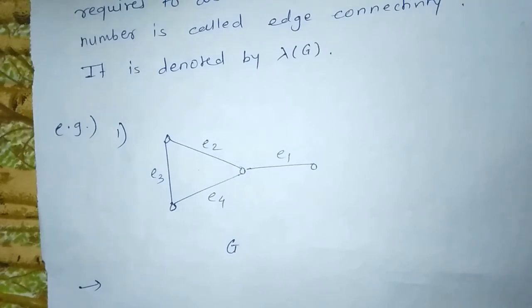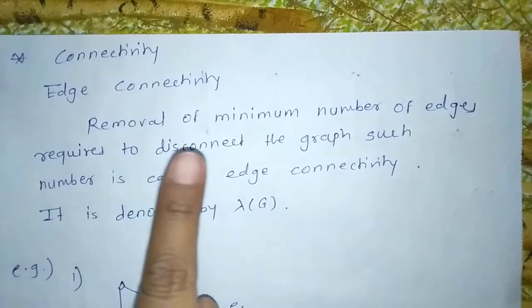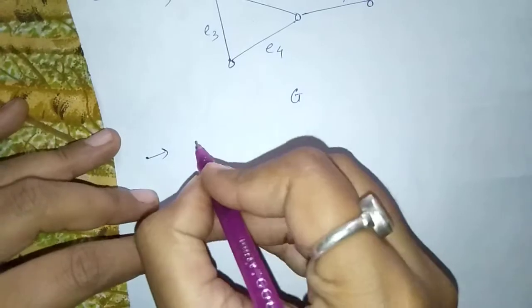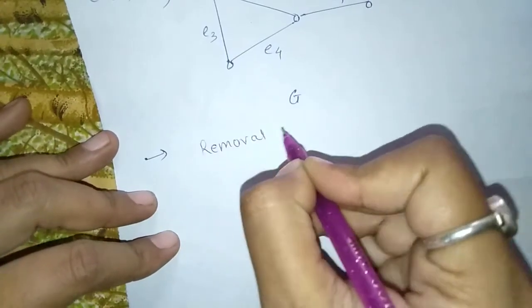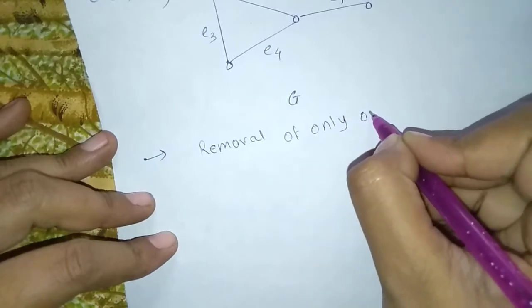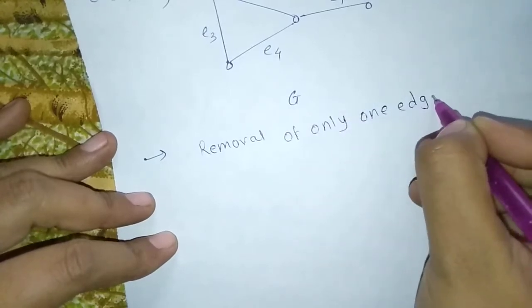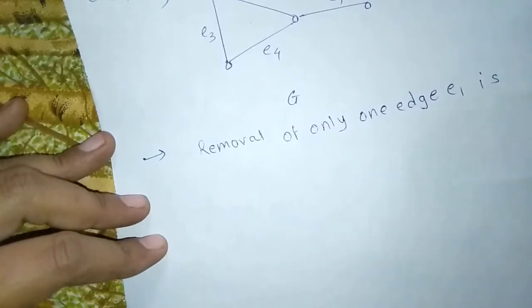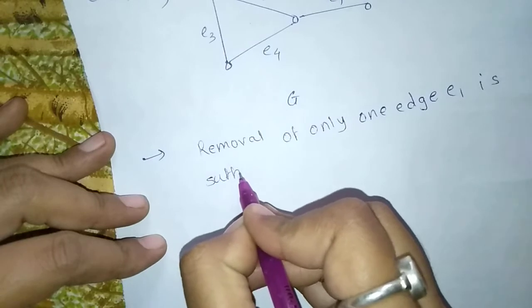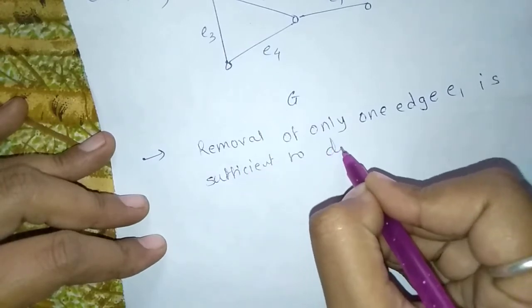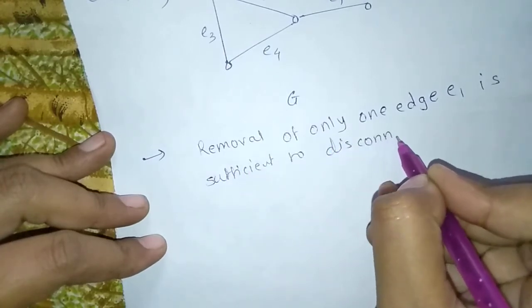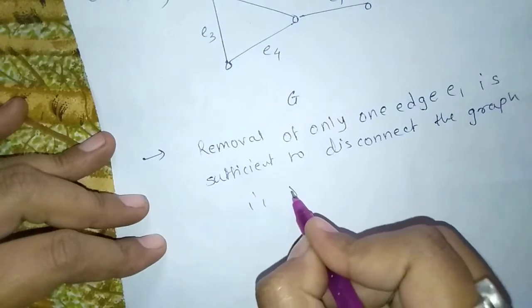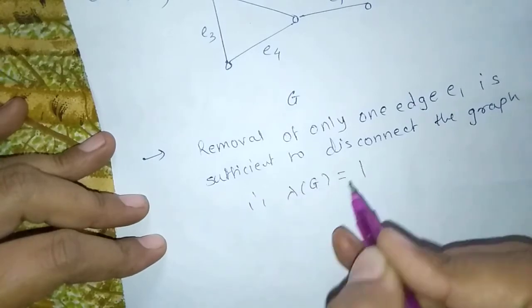Edge connectivity means the minimum number of edges required to disconnect the graph. The answer is removal of only one edge. E1 is sufficient to disconnect the graph G. Therefore, lambda of G is equal to 1.